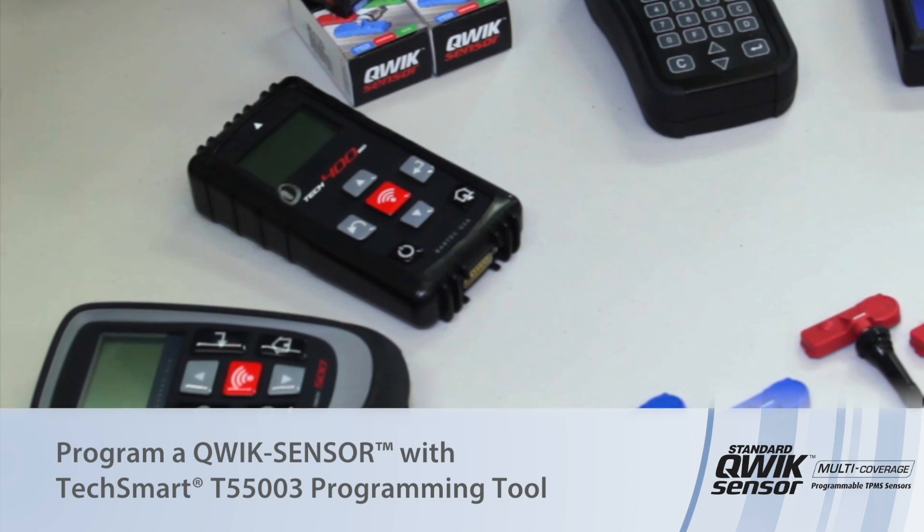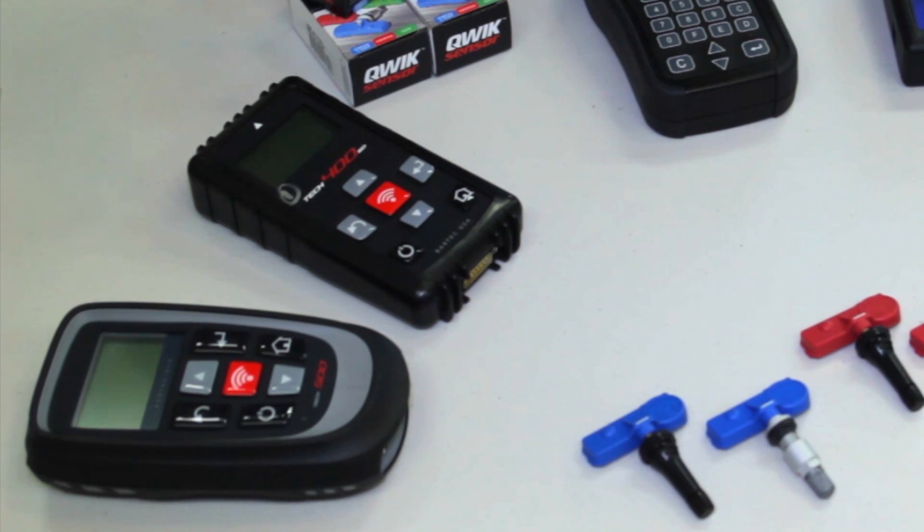Today let's discuss programming the quick sensor. As we stated earlier, the quick sensors are blank sensors that need to be programmed to a particular year, make, and model. Today we're going to program a blue domestic sensor to fit a Chevy Equinox.